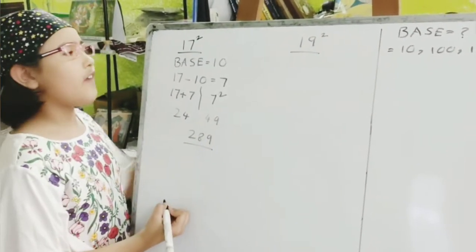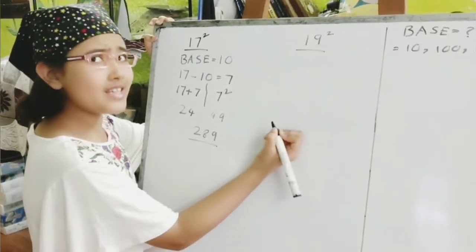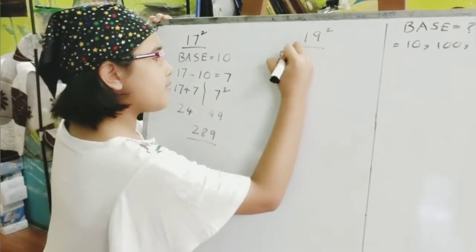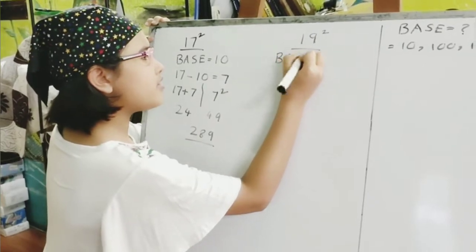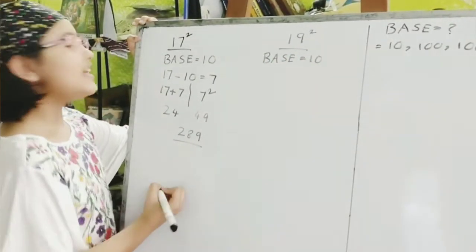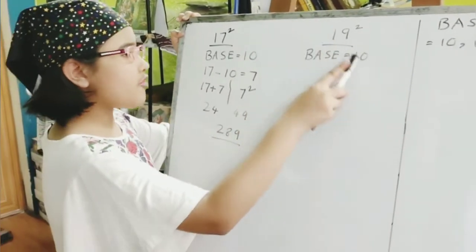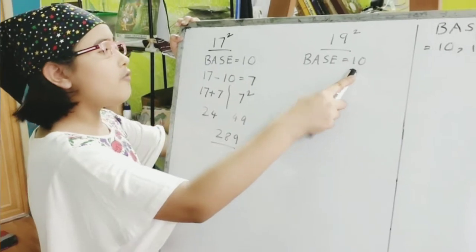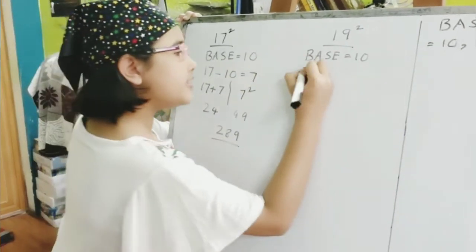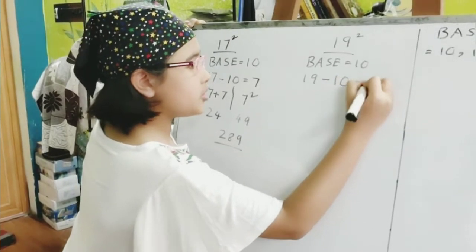Now, as we know, we have to find the base number first. So, that has the same base number. So, we write base number 10. Then, as we know, we have to subtract the base number from the number. So, 19 minus 10 is equal to 9.